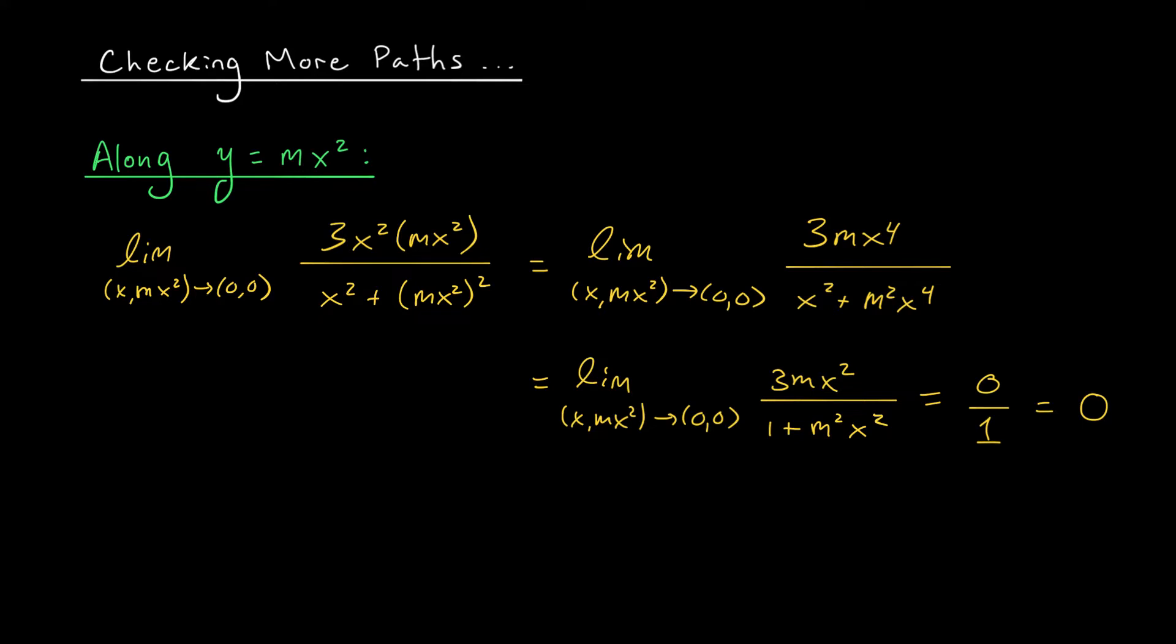Well folks, the same thing is going to occur along parabolas that open in the x direction. And I'm going to leave that to you as an exercise. So as an exercise, verify that our limit is 0 as we approach the origin along any path x equals my², right? That's a parabola opening in the x direction. Okay, I'm starting to get a little suspicious here, folks. Not only does our function approach 0 along any line through the origin, but also along any parabola through the origin that opens in the x or y directions. I'm starting to wonder if maybe this limit exists. Maybe it exists and it's equal to 0.